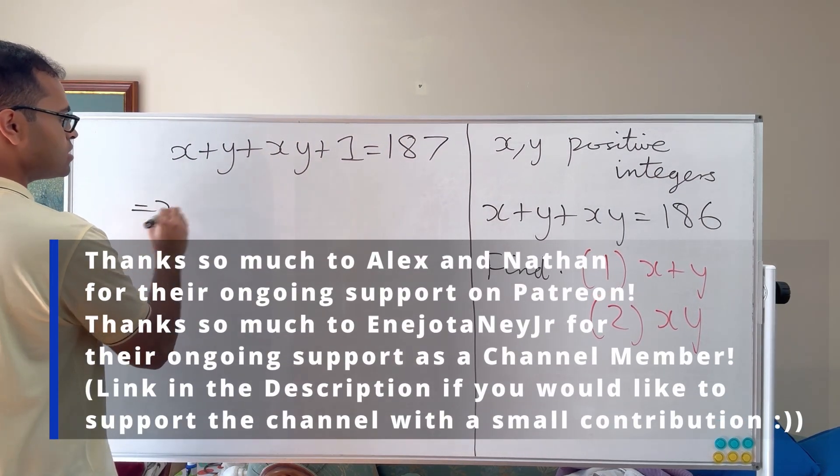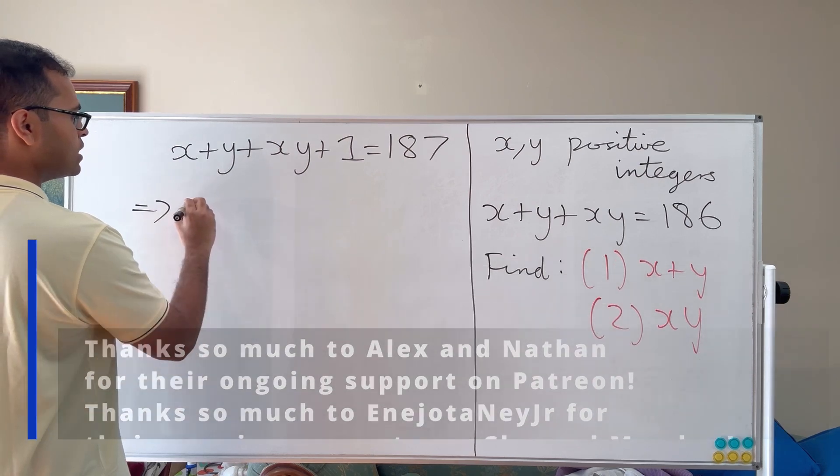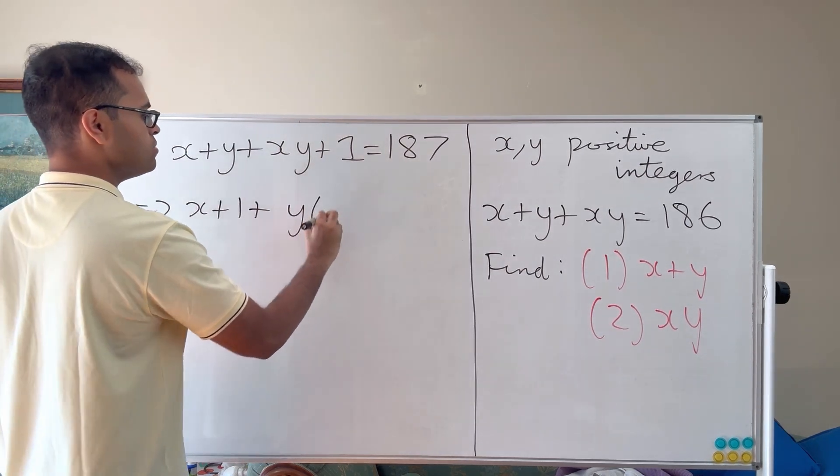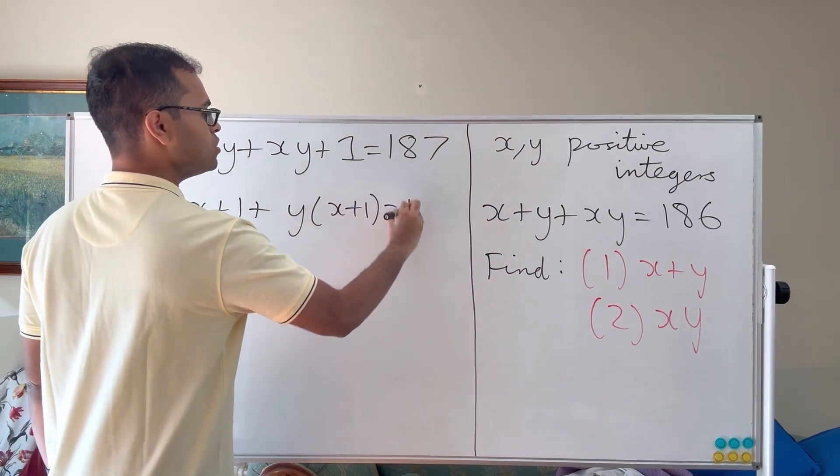Now what we're going to do is factorize. So we can write this as x plus 1 plus y times x plus 1 is equal to 187.